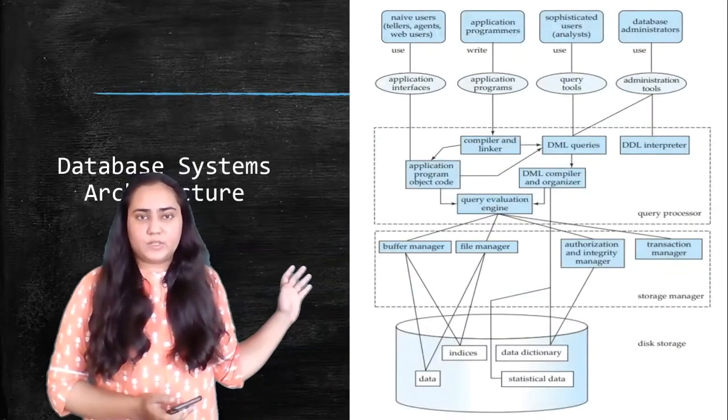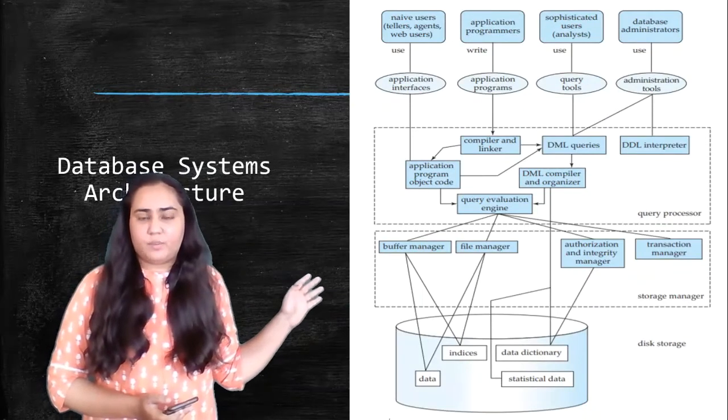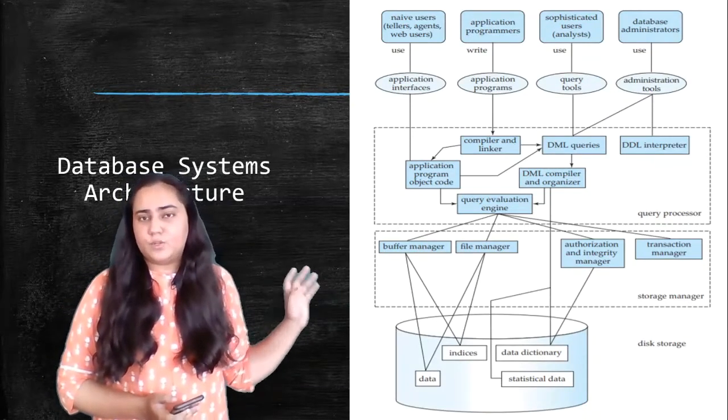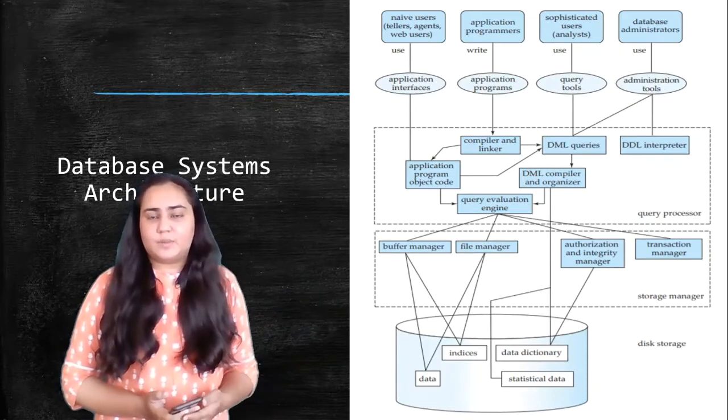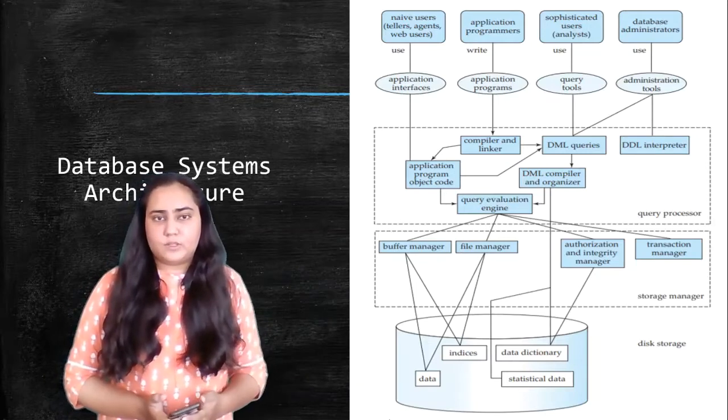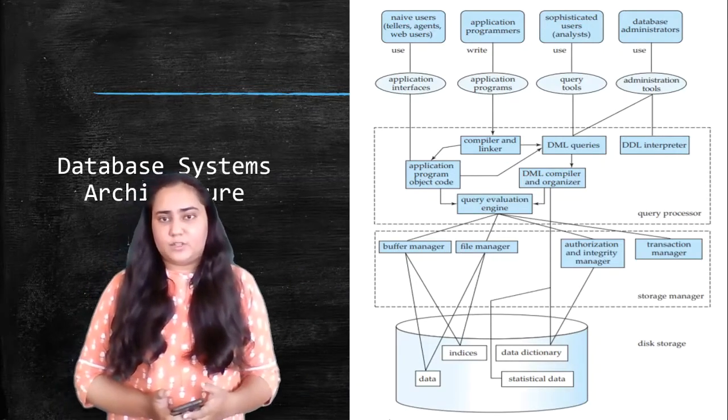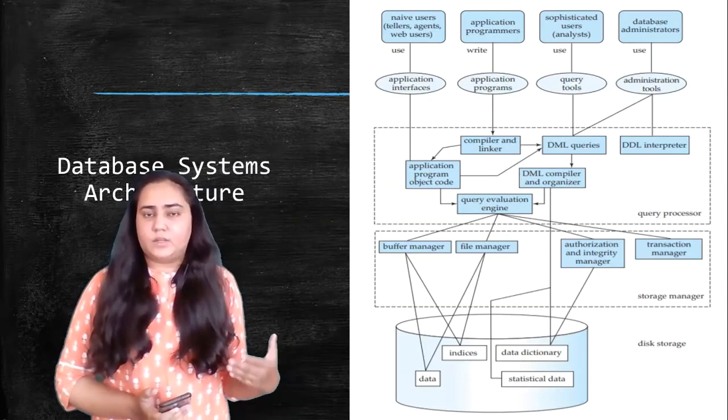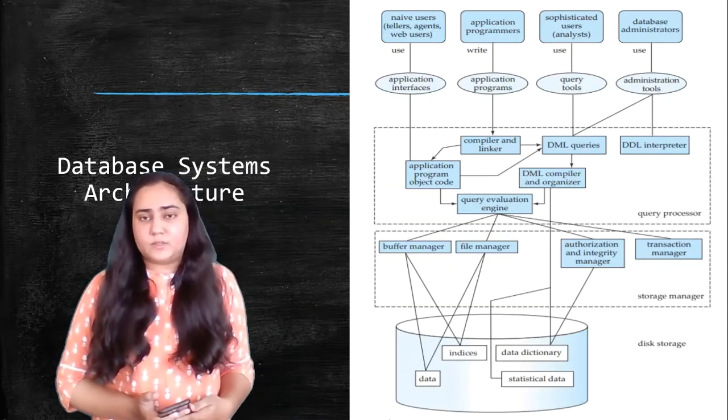This diagram that you see is the diagram of a database system architecture and a very important one if you want to understand how DBMS actually works. This diagram explains to you all the components that are present in a database management system, and so if you know this very well, then you'll be able to understand DBMS a lot better.